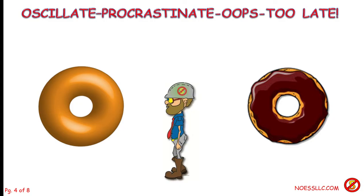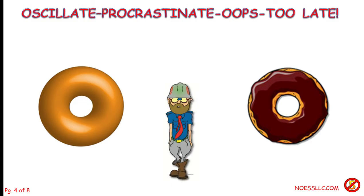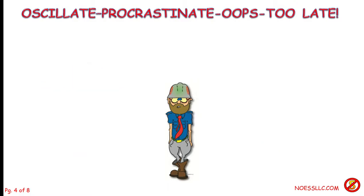It's going back and forth, back and forth, right? So an oscillation is just a movement back and forth, in this instance between two donuts. Actually I think I would just buy both of the donuts, but he messed around too long, and the donuts went away.